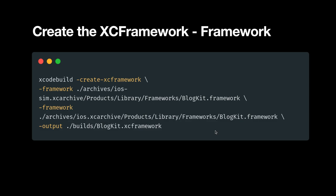To create the XCFramework — this step is specific for frameworks — in the terminal you type xcodebuild and pass in the -create-xcframework command. You pass in the -framework parameter for the path of each framework. In this example we have a couple: one for iOS and one for the simulator. Finally, you specify the output destination and file name. In the example, the output is BlogKit.xcframework.